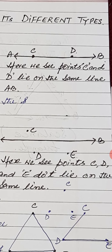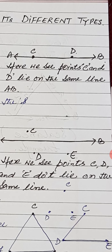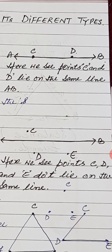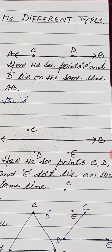We see that point C and point D lie on the same line AB. The points which lie on the same line — those points are called collinear points. The points may be three, four, five, seven, eight, nine, ten and so on. So we can say collinear points are those points which lie on the same line.